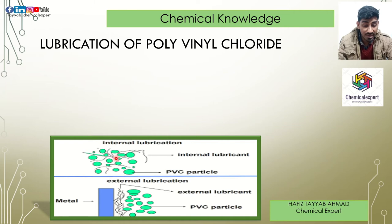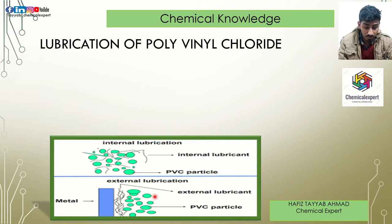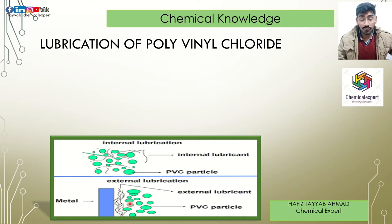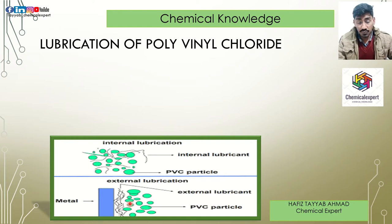You can see here: external lubrication means that polymers slide against the surface of metal — for example, during extrusion, the metal surface or screw surface rubs against the polymer, and we require external lubricants at that time. So: internal lubricants act between layers of monomers, and external lubricants act between PVC and the metal parts of the screw.